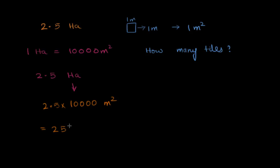So 2.5 into 10,000, which is going to be 25,000. Another way to think about this would be 10,000 into 2 and a half times. So 10,000 into 2 is 20,000. 10,000 into half is 5,000. So 25,000 meters squared. I need a lot of tiles. I need 25,000 tiles to cover this area of 2.5 hectares.